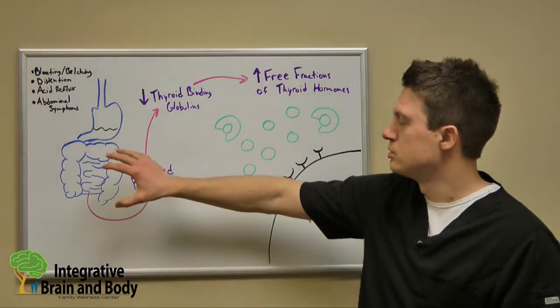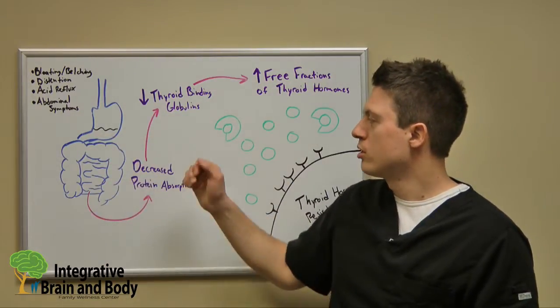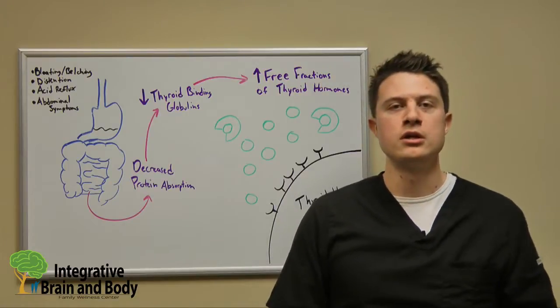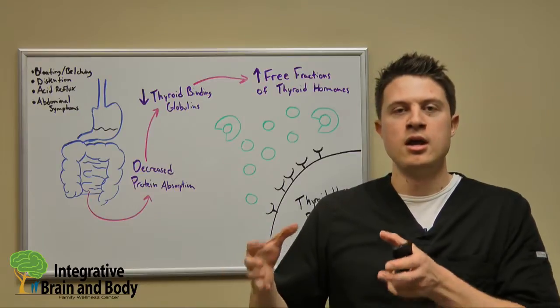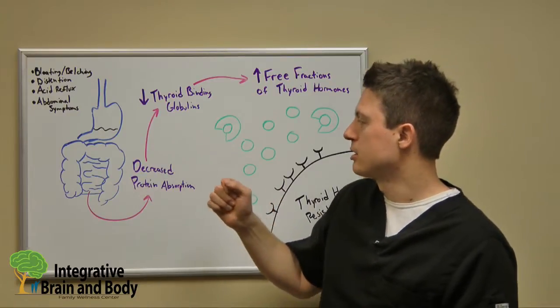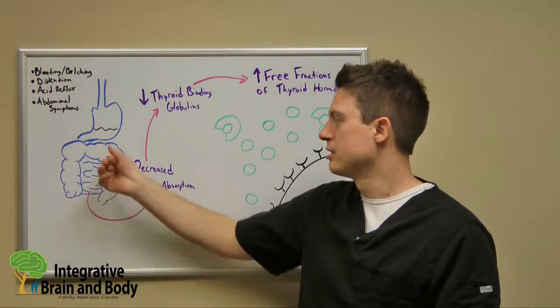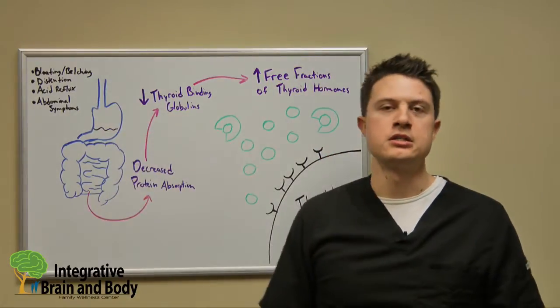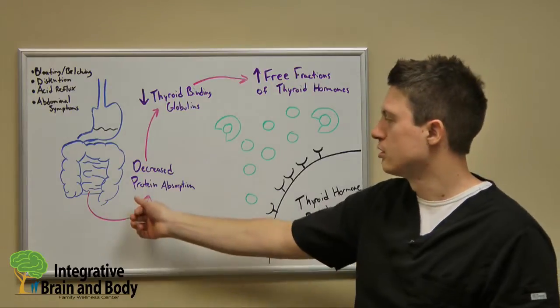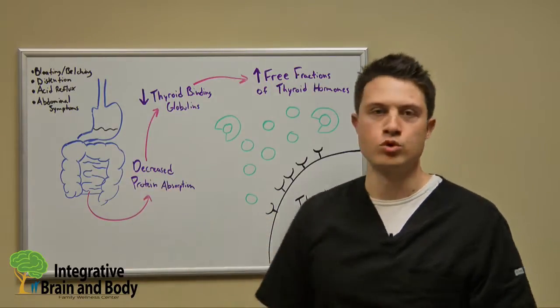That's typically what we'll see with decreased stomach acidity, and one of the things that our stomach is really important for is to be able to break down proteins. How our stomach breaks down proteins is via the hydrochloric acid in it. So if we don't have enough stomach acidity to break down protein, that means we'll see an overall decreased protein absorption.